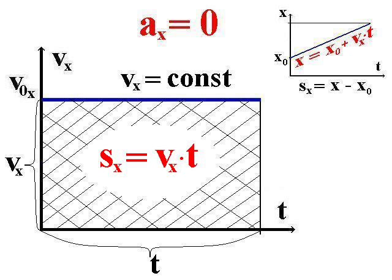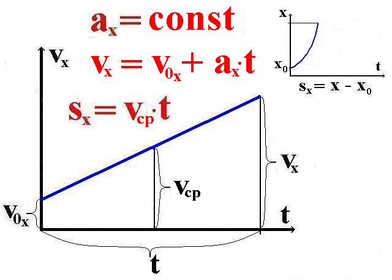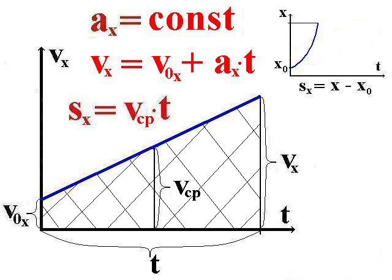V versus velocity over time, S displacement. Now if there's acceleration, we get a different graph with a sloped line. And we'll have to determine the area of the trapezoid to find the displacement.